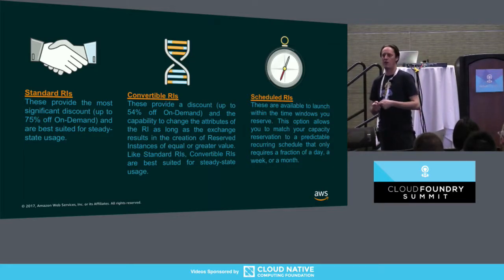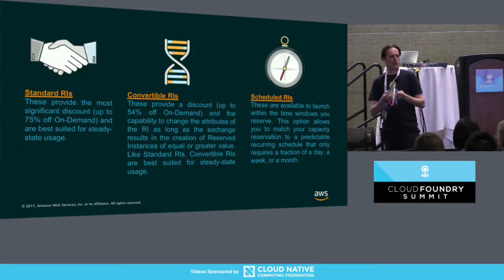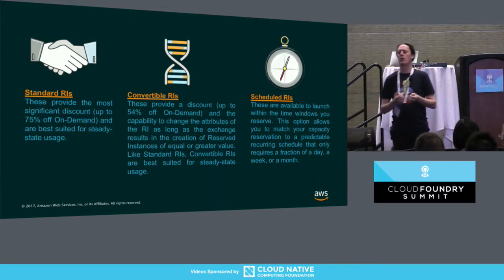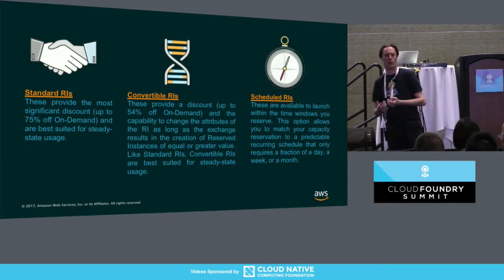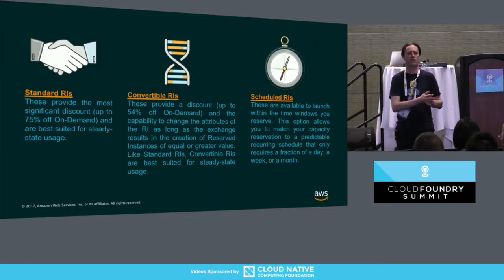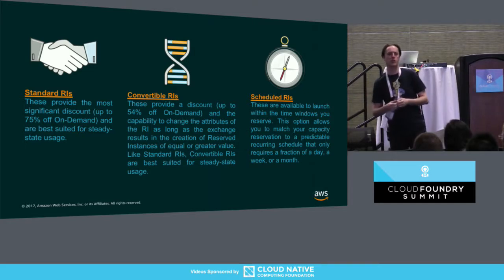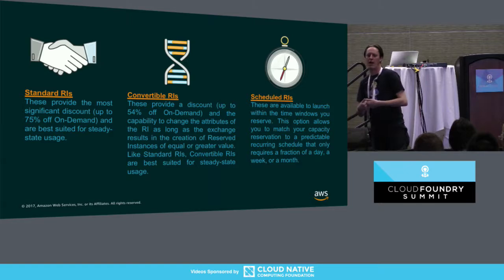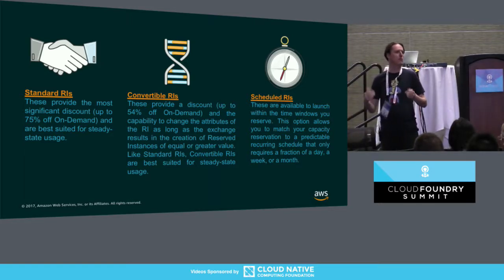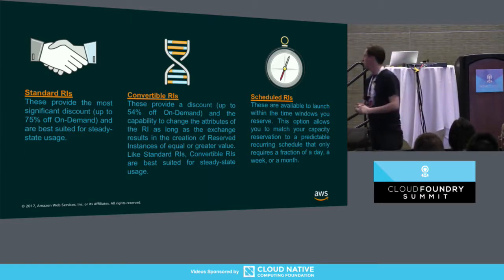You can bundle them together. In a customer context where they're running small workloads and they've bought a reserved instance for, say, a T2 micro, and then their business model changes and they need something like a T2 small — in the past they would have to sell that reserved instance and buy a new one. Now you can buy the slightly larger one and run multiples of the smaller ones.